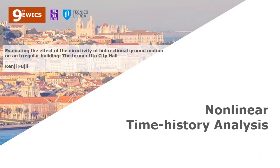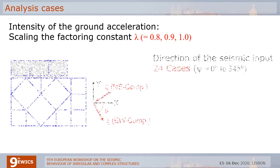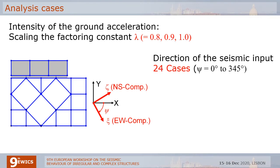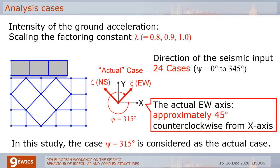We will proceed to the nonlinear time-history analysis. I will explain the analysis cases. The two components are scaled by the same constant lambda. In this study, the constant lambda is set to be 0.8, 0.9, and 1.0. To investigate the effect of directivity, 24 cases are considered. For the direction of the seismic input, the angle of incidence, psi, is set from 0 to 345 degrees clockwise from the x-axis. It should be mentioned that the actual EW axis is approximately 45 degrees counterclockwise from the x-axis. Therefore, the case psi equals 315 degrees is considered as the actual case in this study.